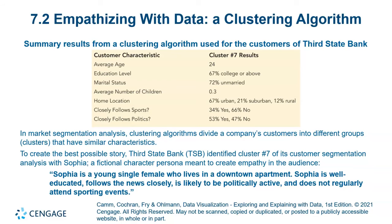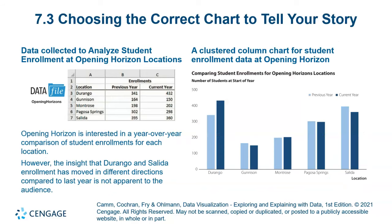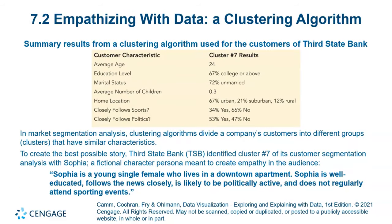When empathizing with data involving a clustering algorithm, we can associate a story with the cluster. For example: Sophia is a young single female who lives in a downtown apartment. Sophia is well educated, follows the news closely, is likely to be politically active, and does not regularly attend sports events. In market segmentation analysis, clustering algorithms divide a company's customers into different groups. To create the best possible story, Third State Bank identified cluster seven of its customer segmentation analysis with the persona of Sophia.